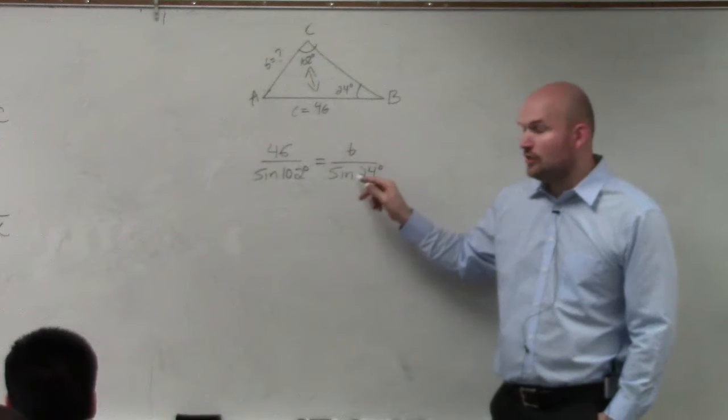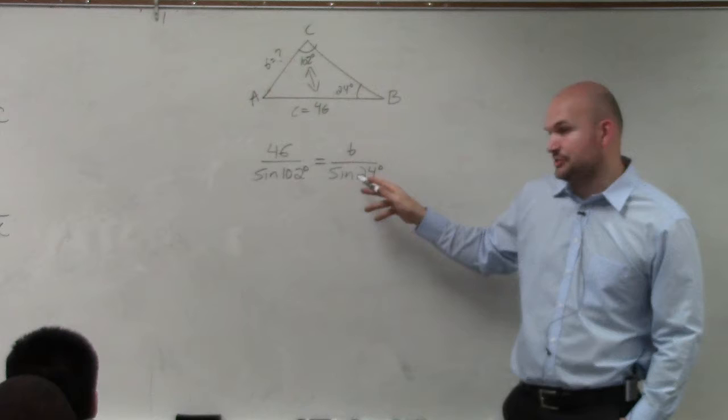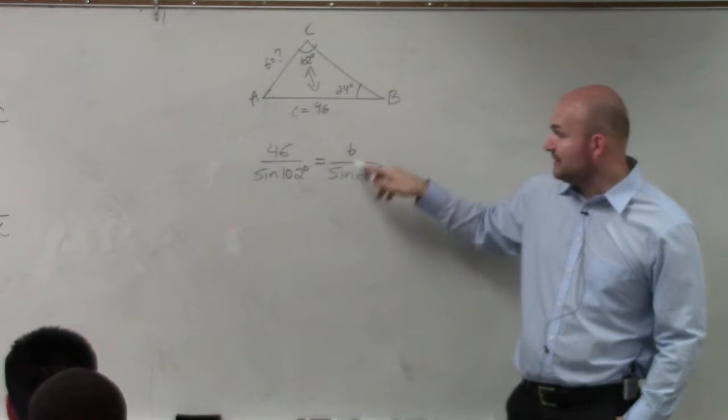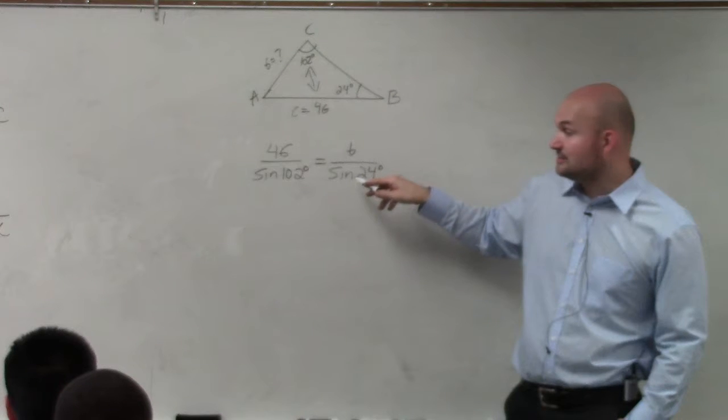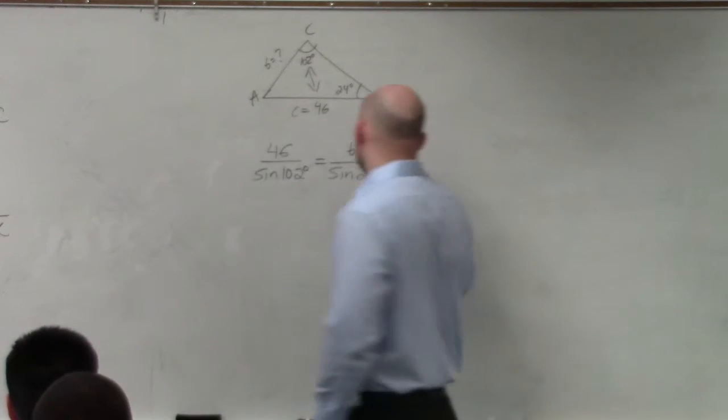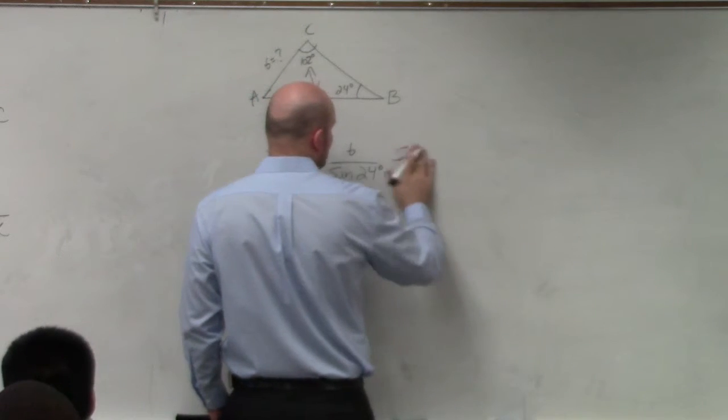Now, basically what we need to do to solve for b, I don't like using the word cross multiply, because all I need to do, if I need to solve for b, b is being divided by sine of 24. So, therefore, all I need to do, then, to undo divided by sine of 24 is to simply multiply by the sine of 24.